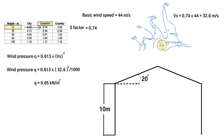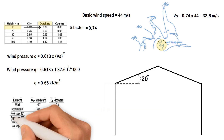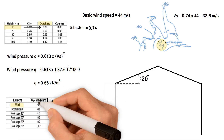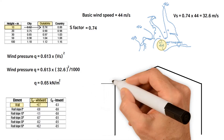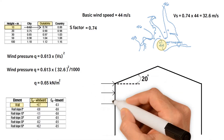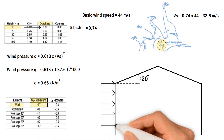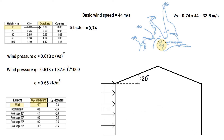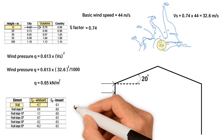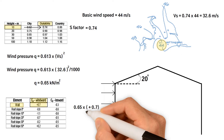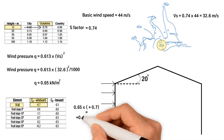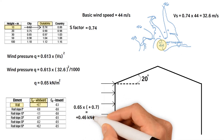Now we need to work out the loads on the walls. We need to identify a pressure coefficient from the table for the windward side. We can see it is positive 0.7, meaning the windward side of the building is going to be subjected to a positive pressure — the wind is pressing against the wall. Therefore, the load on the windward side equals wind pressure 0.65 times the pressure coefficient 0.7, giving us 0.46 kN/m² wind load on the windward side.